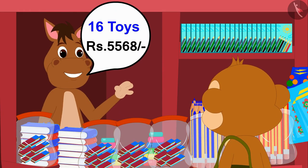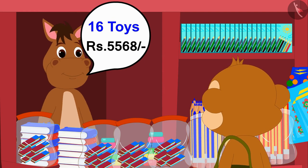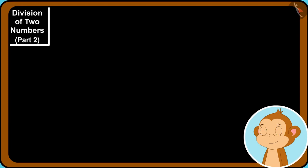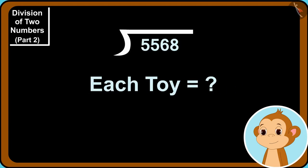Now, Babban bought 16 toys for 5568. Babban wants to find out how much each toy is worth by using the simple division process learned from Gaggu. Children, can you help Babban in finding the answer?